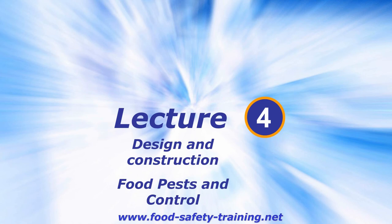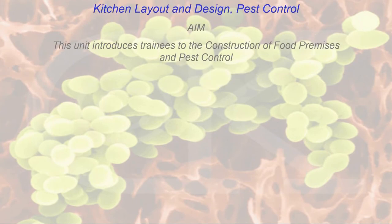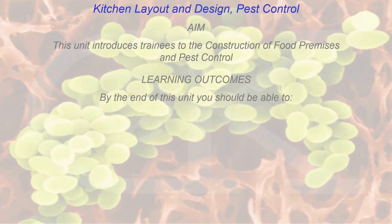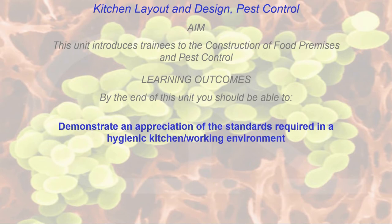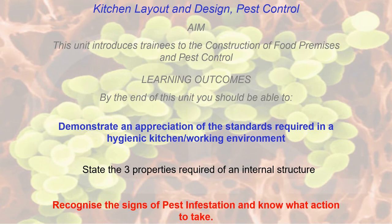Here's lecture four, just two more lectures to go. This is all about design and construction of food premises and kitchens, and food pests and control. The aim of this unit is to introduce you to the construction of food premises, kitchens, and pest control. By the end of this unit you will be able to demonstrate an appreciation of the standards required in a hygienic kitchen working environment, state the three properties required of an internal structure, and recognize the signs of pest infestation and know what action to take.